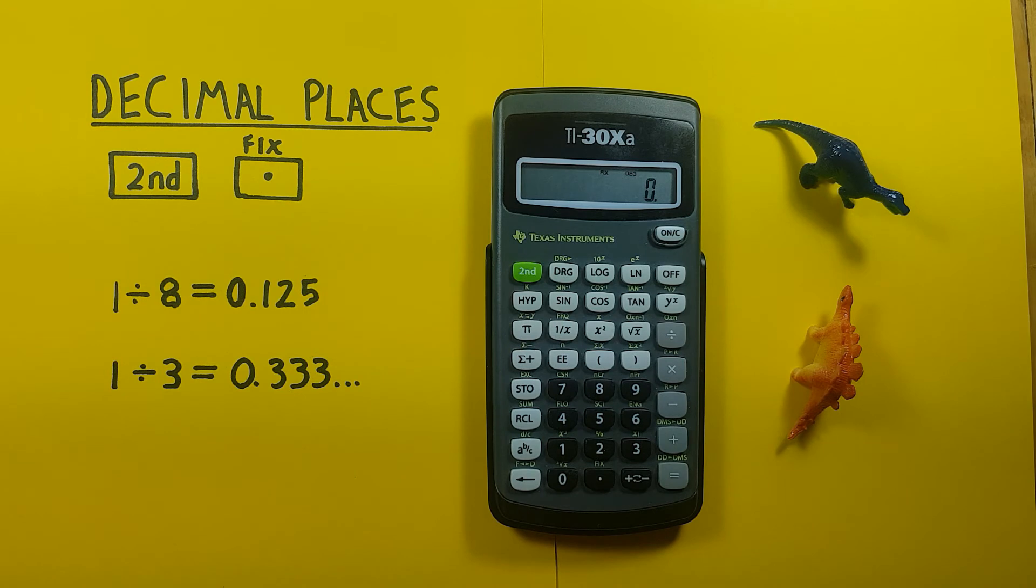We can turn our calculator back to normal mode or turn off fixed mode by pressing 2nd, decimal, and decimal again.